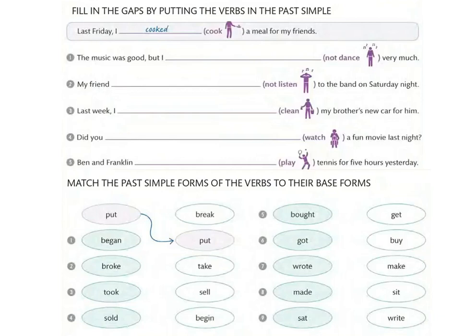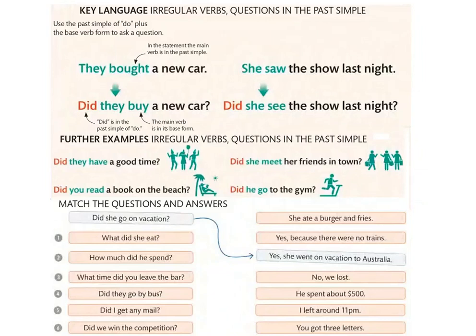Now for question formation. They bought a new car → Did they buy a new car? — نبدأ بـ did، نحطوا subject، والفعل يرجع لbase form: buy. She saw the show last night → Did she see the show last night? — ما نقولوش 'did she saw' — saw يرجع لـ see في السؤال.